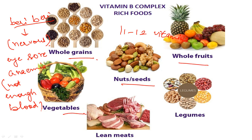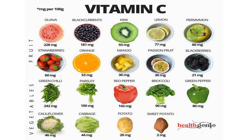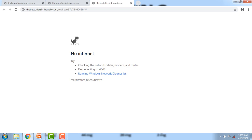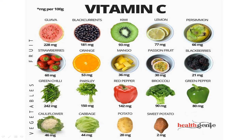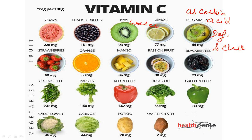Citrus fruits like amla, lemon, and orange are rich in vitamin C. Vitamin C is water-soluble and chemically known as ascorbic acid. Its deficiency disease is called scurvy.